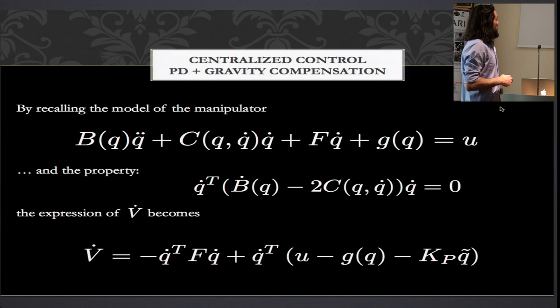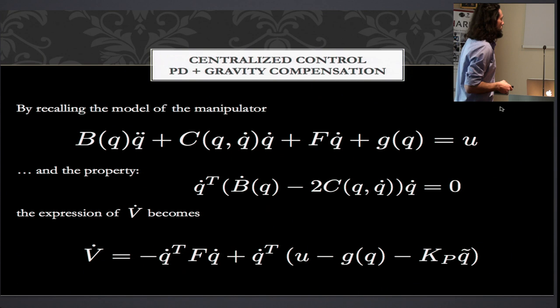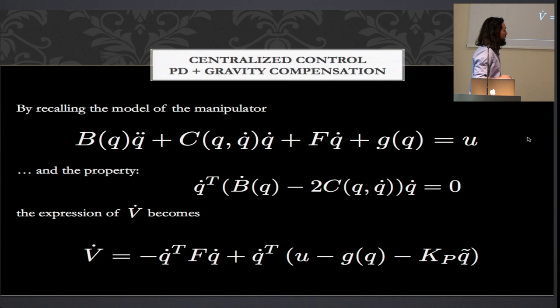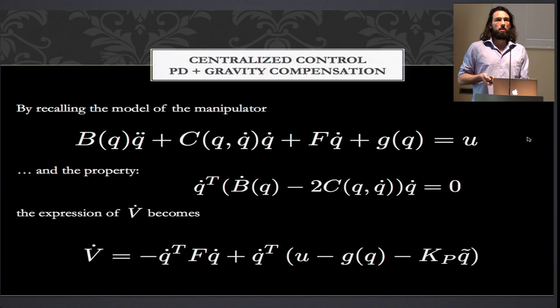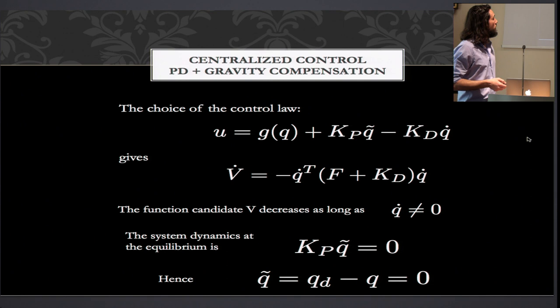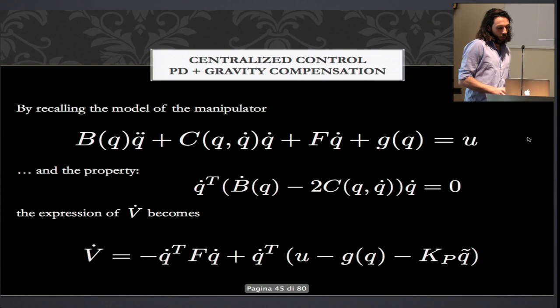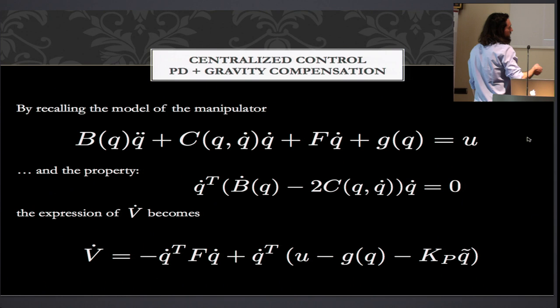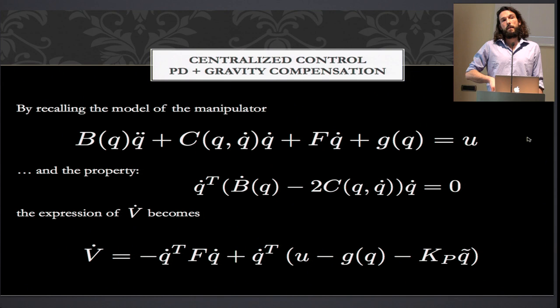Taking advantage of this relation and substituting B times q_double_dot in the expression of V_dot, we obtain a term that is always negative, and we can use the control variable to make V_dot negative definite. A suitable choice for the control law is to cancel two terms and make the remaining part also negative. The overall expression of V_dot includes a velocity-related action — not strictly required since we already have the damping matrix F, which by assumption is positive definite — but the K_D term improves the damping performance of the system.